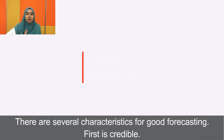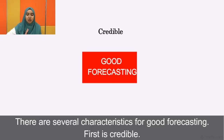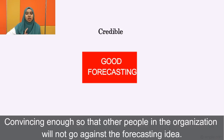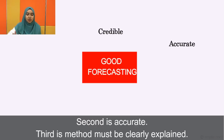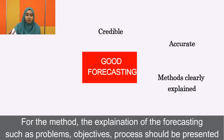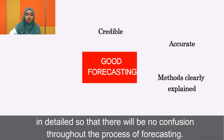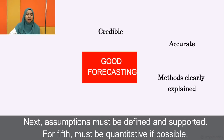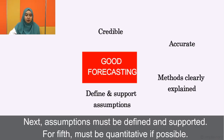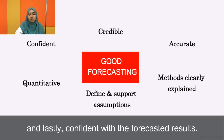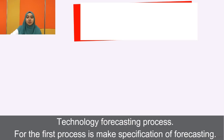There are several characteristics of good forecasting. First, it must be credible — convincing enough so that others in the organization will not go against the forecasting idea. Second is accurate. Third, the method must be clearly explained; problems, objectives, and process should be presented in detail to avoid confusion. Next, assumptions must be defined and supported. Forecasts must be quantitative if possible, and lastly, one must be confident with the forecasted result.